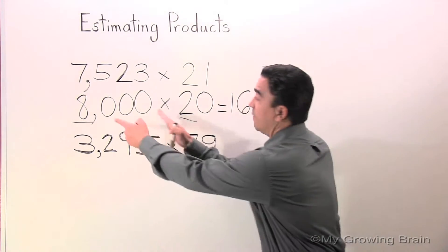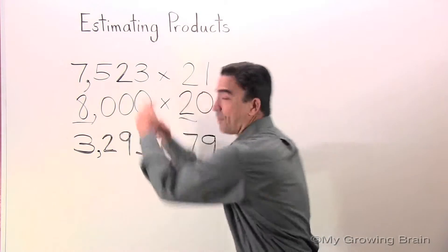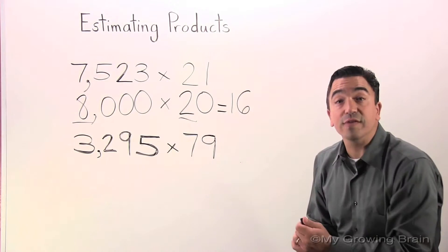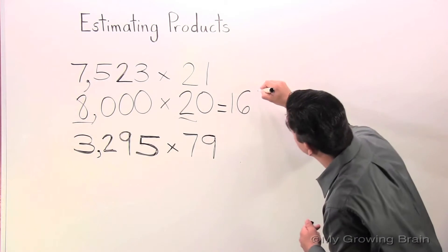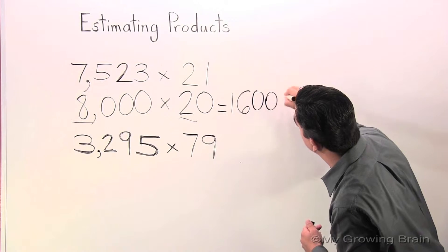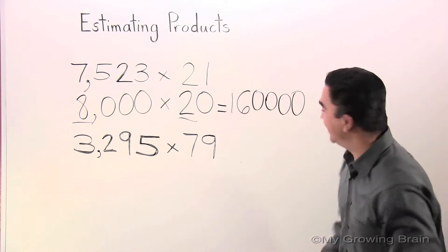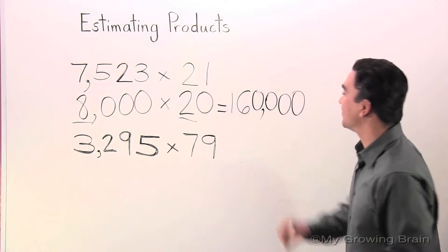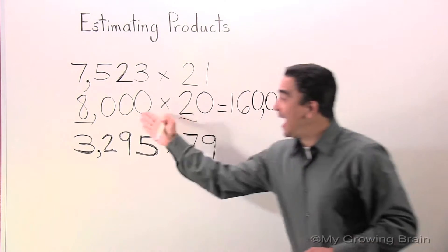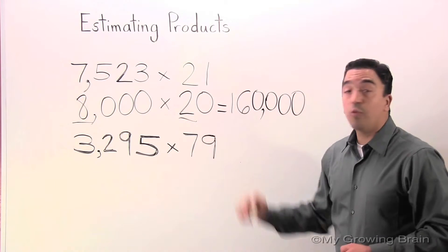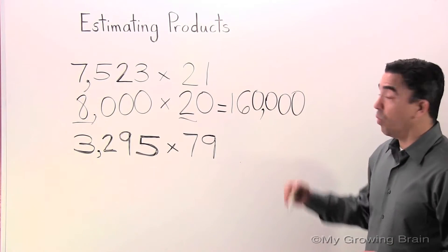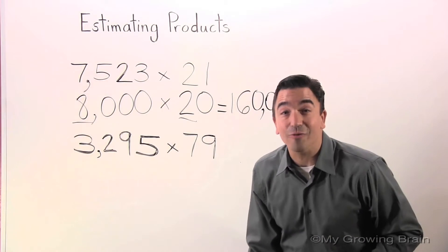I'm going to take my four zeros and I'm going to put them after the 16. One, two, three, four. Don't forget the comma. 8,000 times 20 equals 160,000.